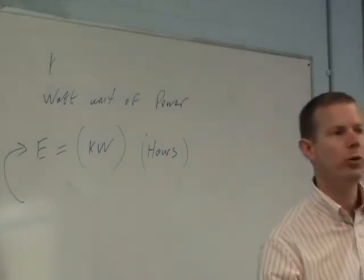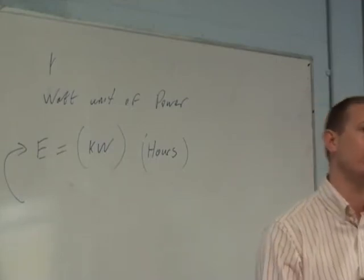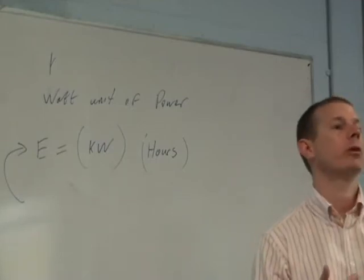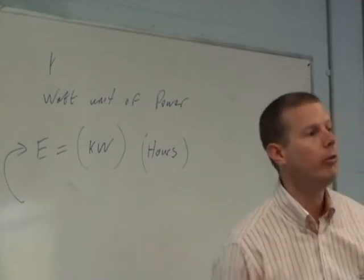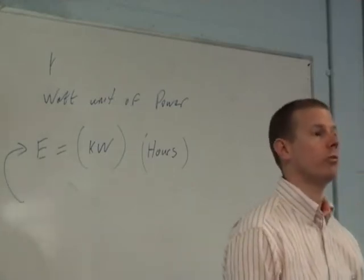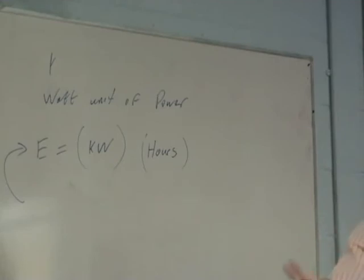So every time the hairdryer is going, each second, 2,000 joules of electrical energy are going in, and ideally 2,000 joules of heat energy are coming out. Some of it is being converted to sound. If you have that going for three hours, so your hairdryer on for three hours, 2,000 watts, what is your total number of units?